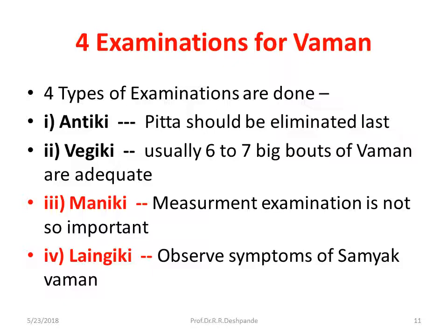There are four tests to check whether Vamana is completed: Antiki, Vegiki, Maniki, and Lengiki. Antiki means observing what the Vamitas looks like at the end — Pitta should be eliminated last. First, the dinner the patient ate will come out, then milk, curd, banana, and all the mixtures, and at last, yellowish Pitta will be seen in the Vamitas. Vegiki refers to the number of bouts of vomiting — six to seven bouts are considered adequate. Maniki means measurement — how much quantity was given to the patient versus how much was expelled.